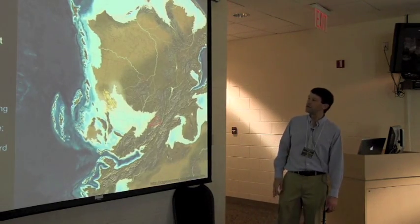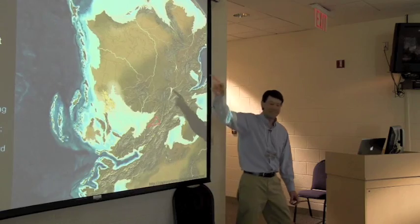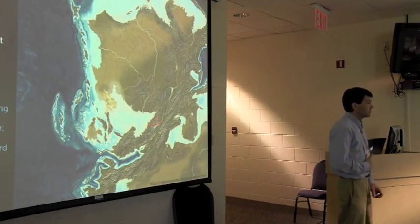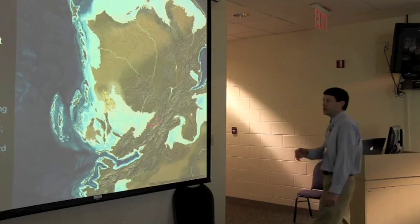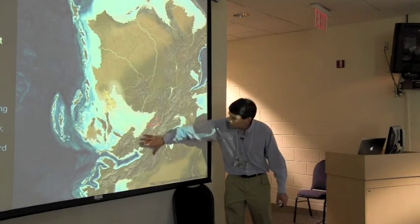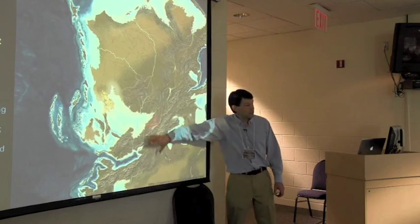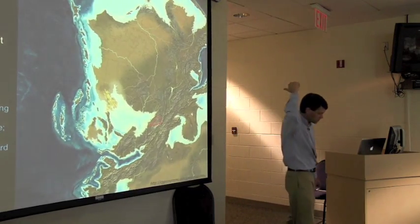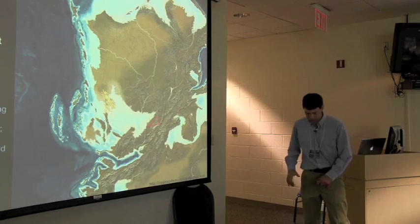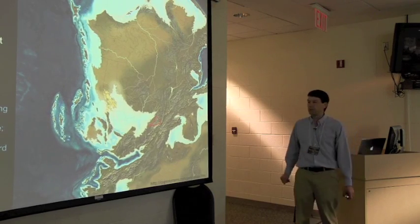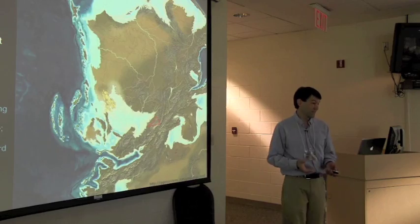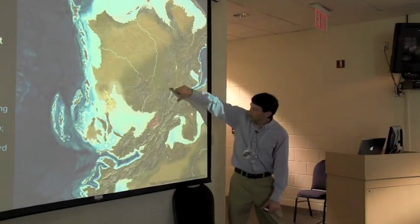I guess I didn't write Pangaea in there, which I should have. We think of this as the Alleghenian orogeny. It would have produced Himalayan scale mountains through much of the southeast. The remnants are behind us in the Blue Ridge. It certainly brought the Blue Ridge rocks up from a previous depth of 15 kilometers at least.